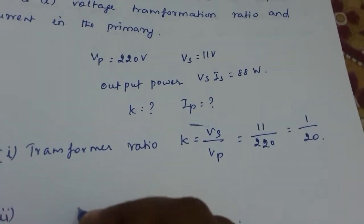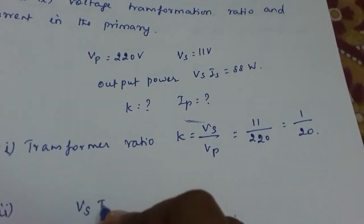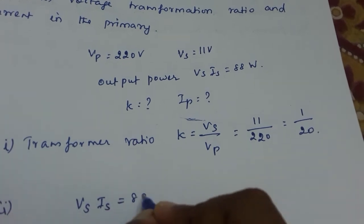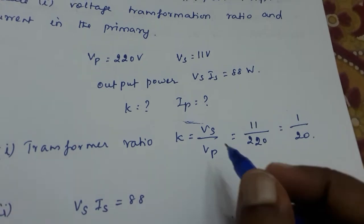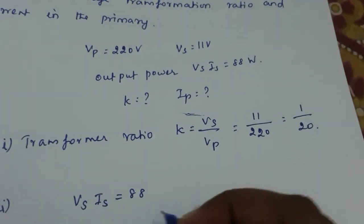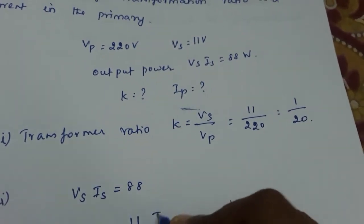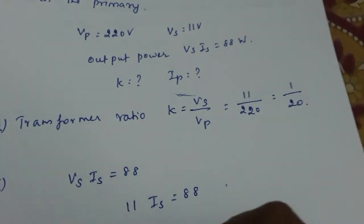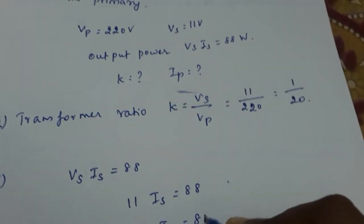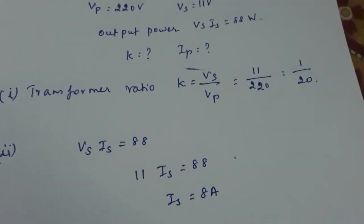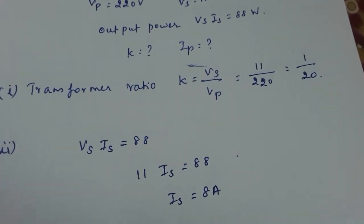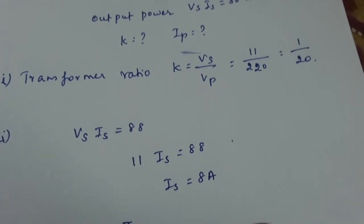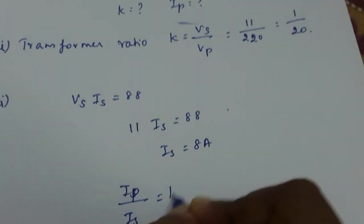Now what is given: the output power is given as VsIs is equal to 88. We know Vs, Vs is equal to 11. 11 into Is is equal to 88, so Is is equal to 8 ampere.